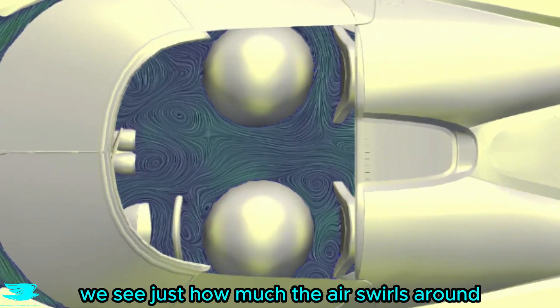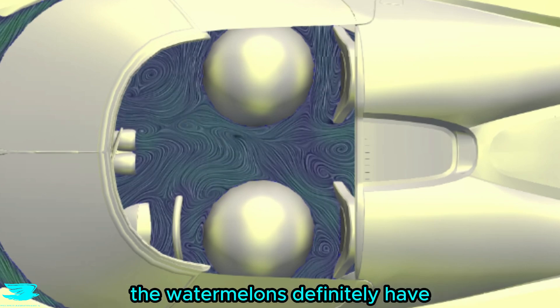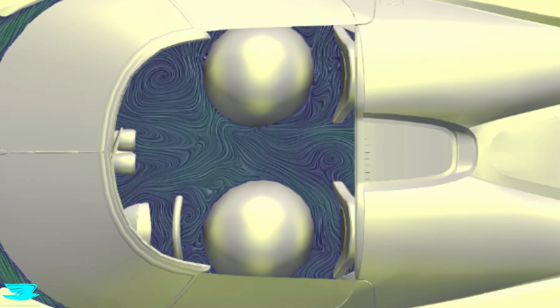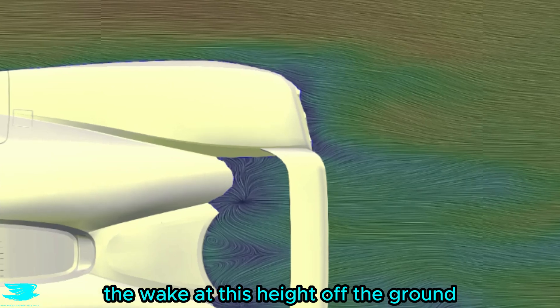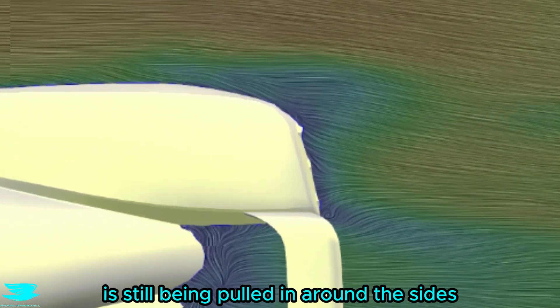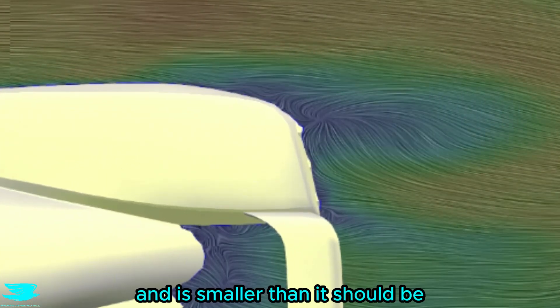And in the cabin we see just how much the air swirls around. The watermelons definitely have a draft in there. But even without the roof, the wake at this height off the ground is still being pulled in around the sides and is smaller than it should be because of clever aero which reduces drag.